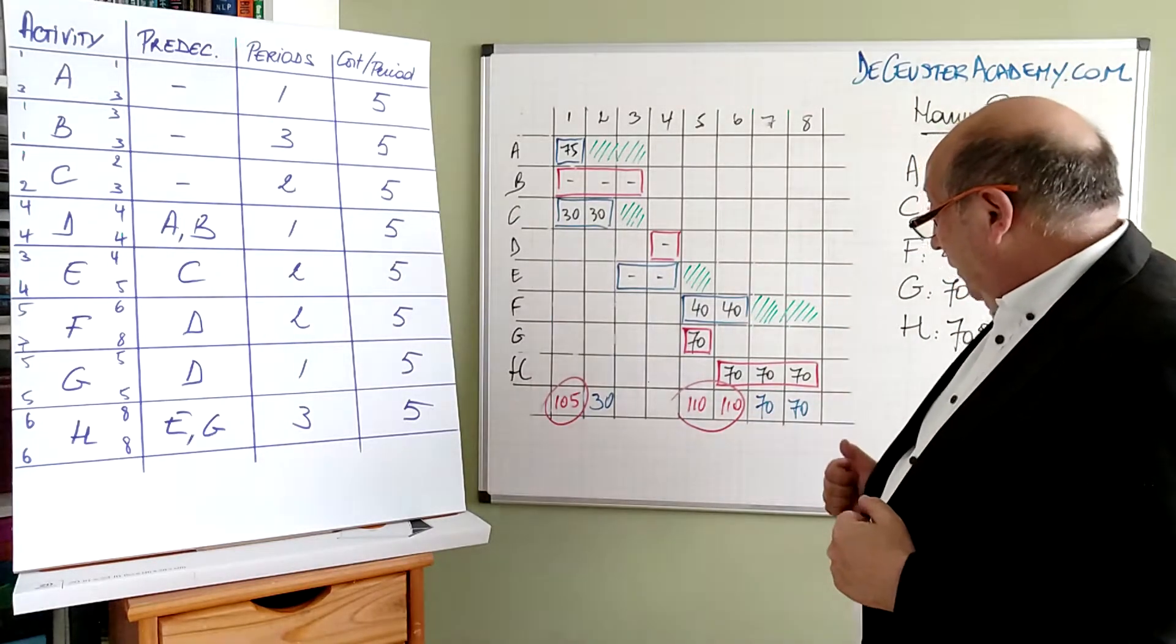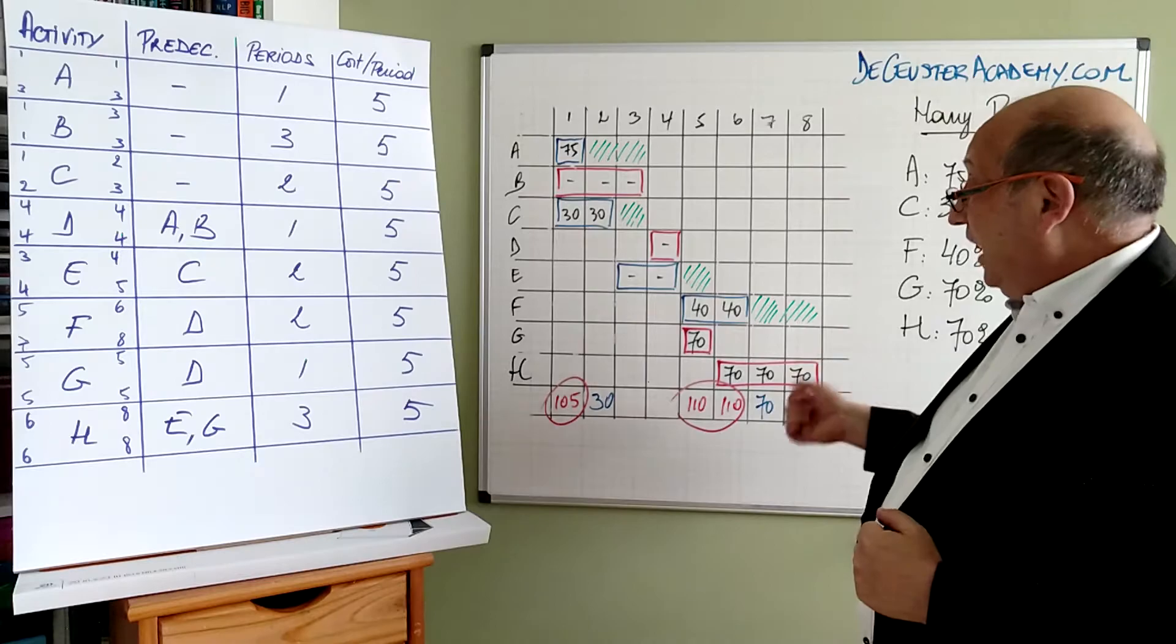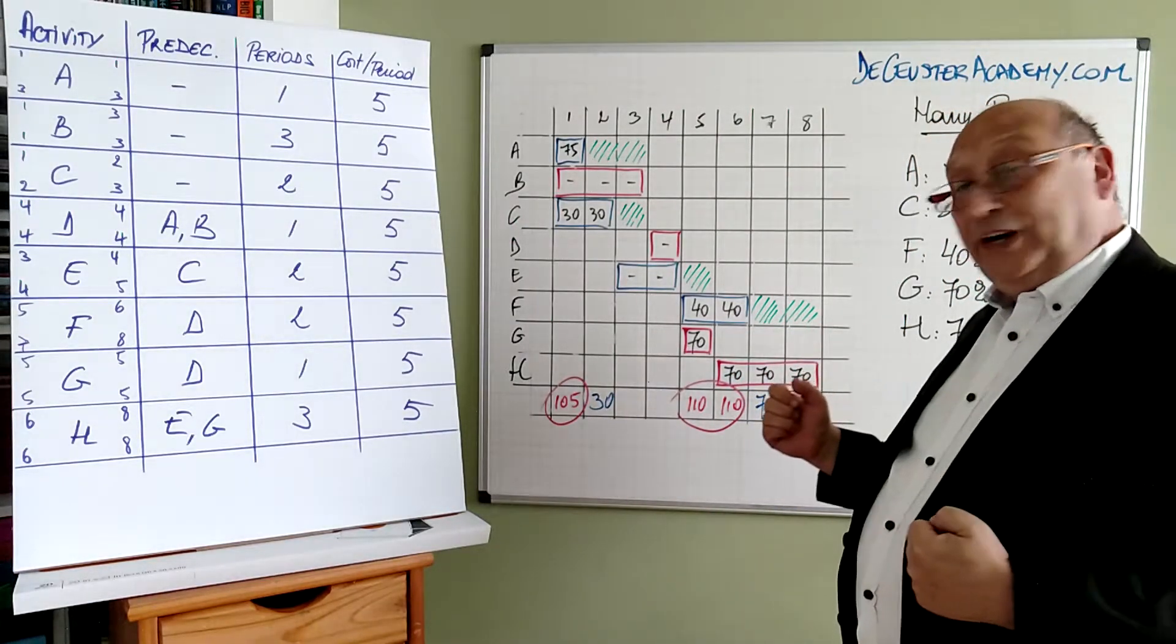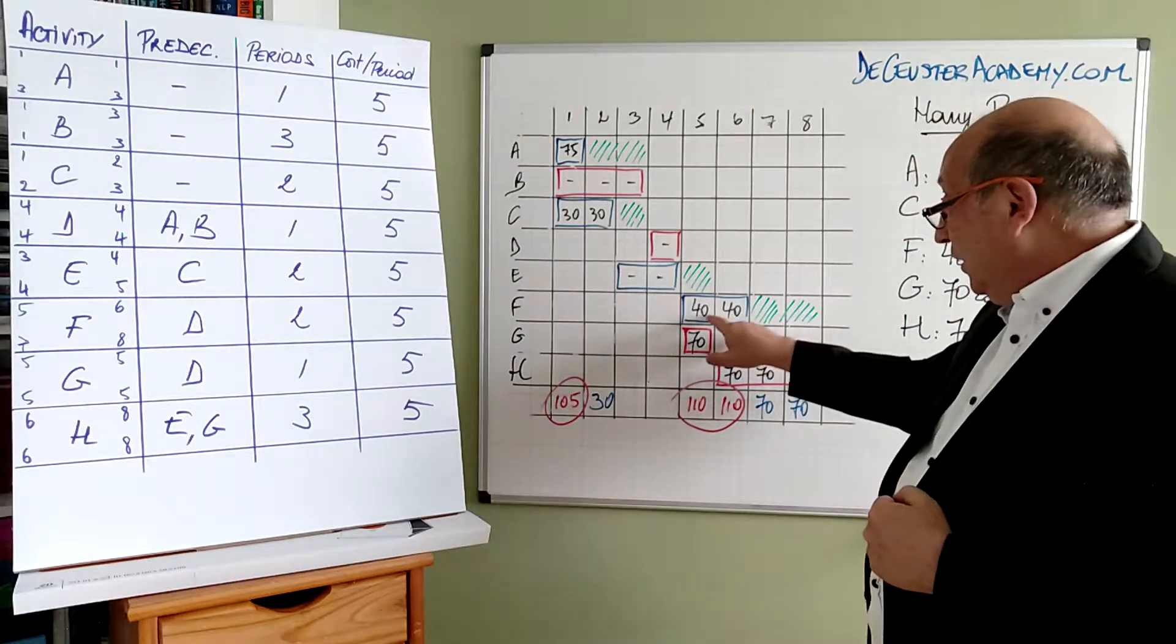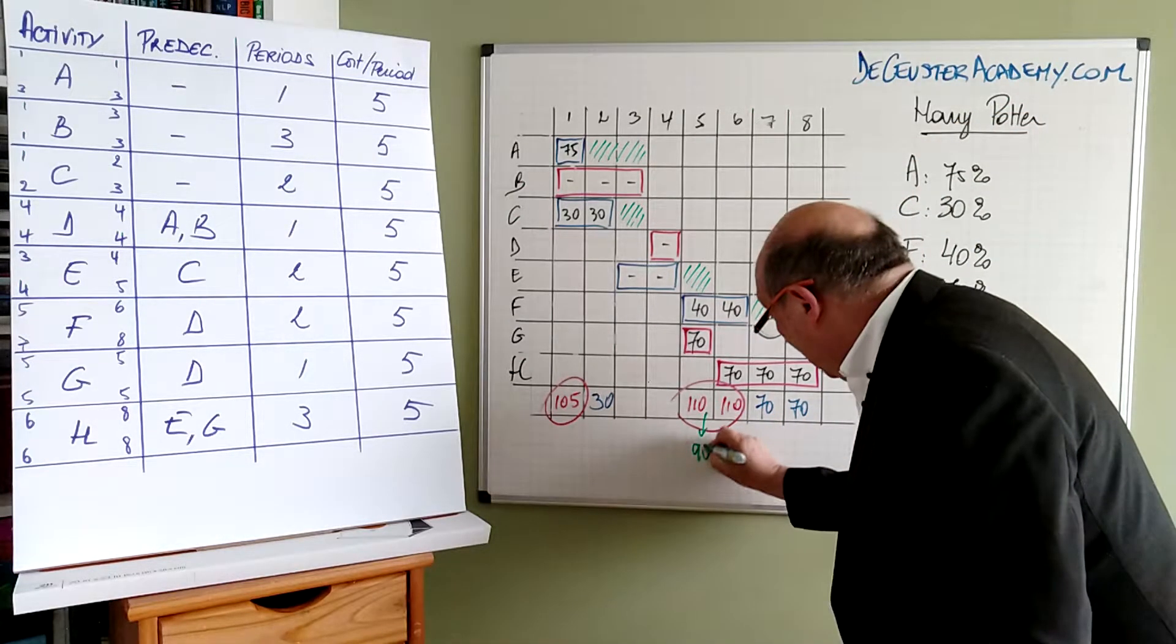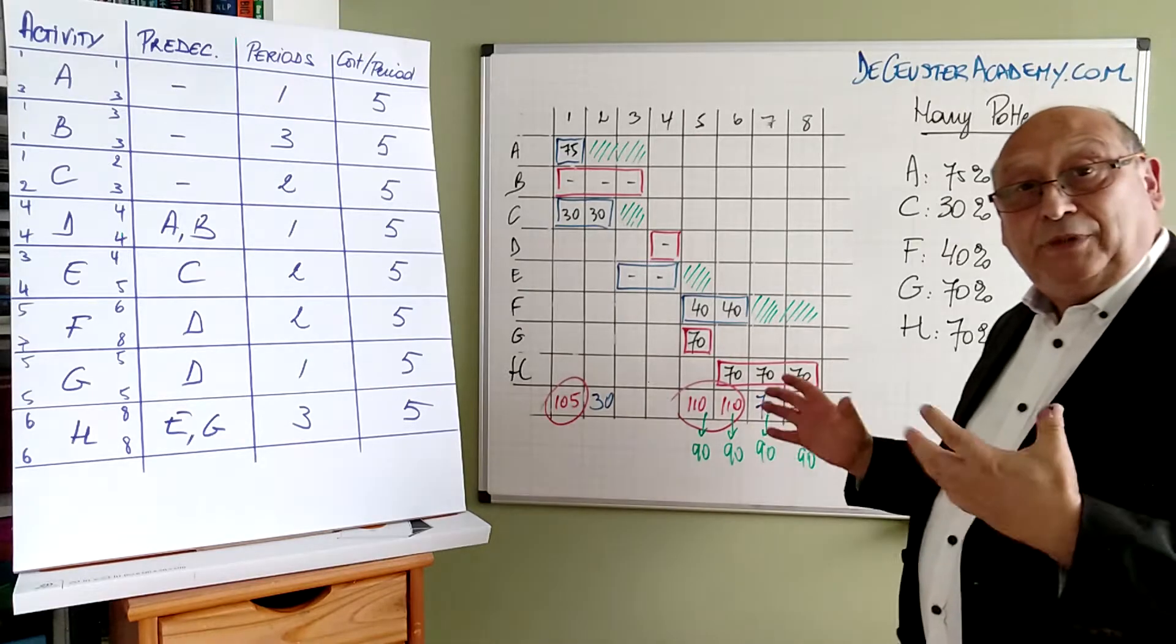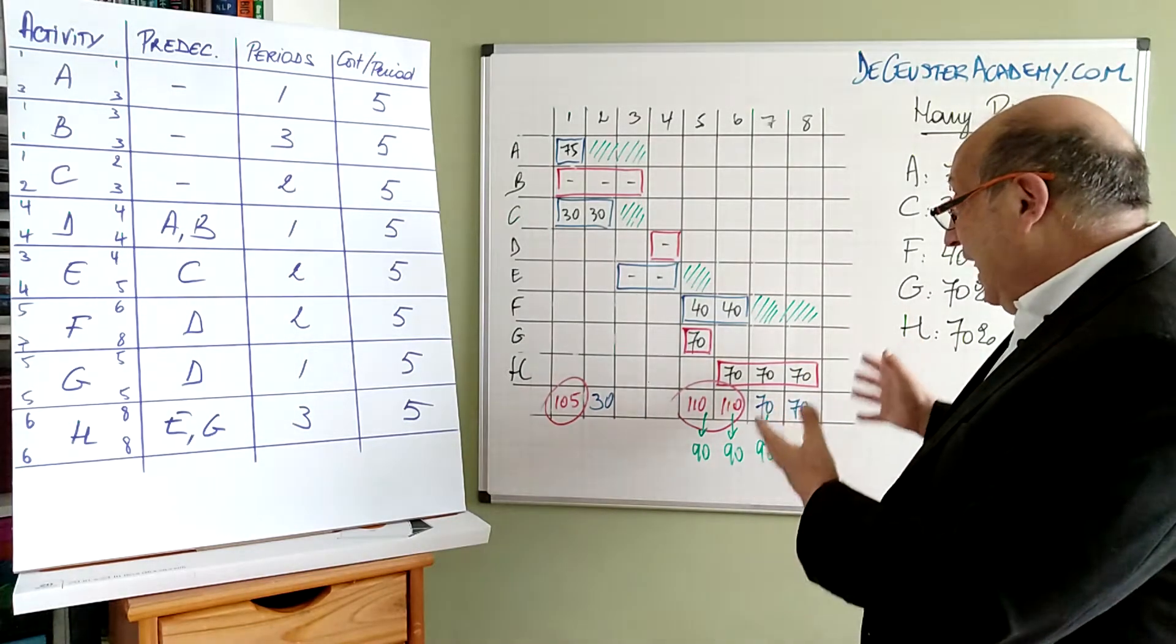Here we have a similar problem. We have G and H, which are in fact on the critical path. It gives us a problem. But we are lucky with activity F. Activity F here has two periods, but a slack of two periods too. So when I double the duration of activity F, we see that this becomes 20, 20, 20 and 20%. Basically, we go here from 110 to 90. We go here to 90. We also go here to 90 and here to 90%. So in this case, we are quite lucky because we can resolve the resource problem just looking at the table.